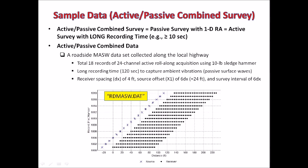The sample data from active-passive combined survey is called rdmasw.dat. It is a real dataset collected along the local highway. This type of MASW survey is sometimes called roadside MASW survey. The data contains total 18 records of 24-channel acquisition collected through conventional roll-along acquisition that used the 10-pound sledgehammer as an active source.